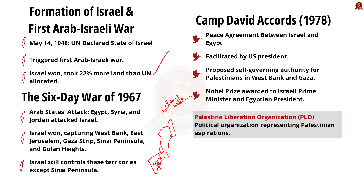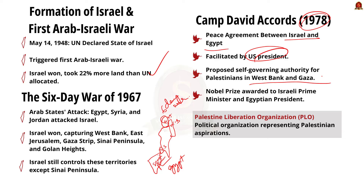Another war happened in 1967, called the Six-Day War, when neighboring Arab states like Egypt, Syria, and Jordan attacked Israel to help Palestine. The war lasted only six days and Israel won. Israel captured the West Bank and East Jerusalem from Jordan, the Gaza Strip and Sinai Peninsula from Egypt, and the Golan Heights from Syria. Israel still controls all these territories except the Sinai Peninsula, which was returned to Egypt. The Camp David Accords in 1978 were a peace agreement between Israel and Egypt facilitated by the United States, proposing self-governing authority for Palestinians in the West Bank and Gaza.